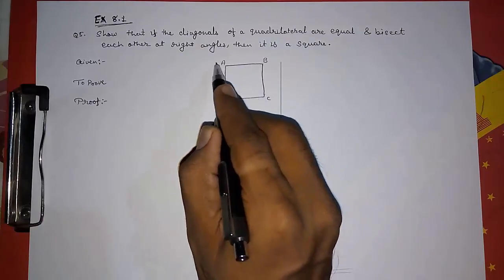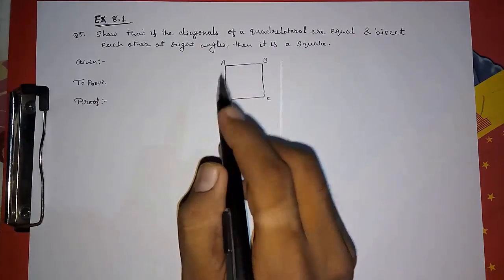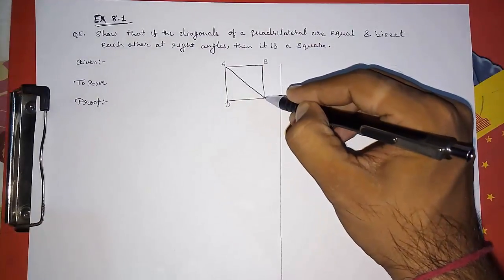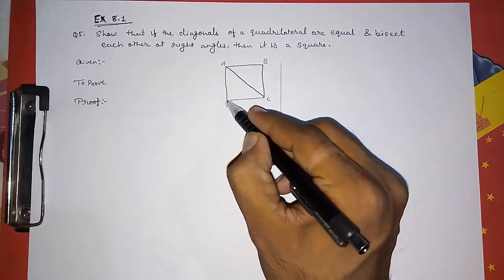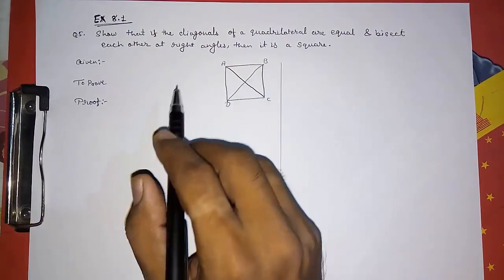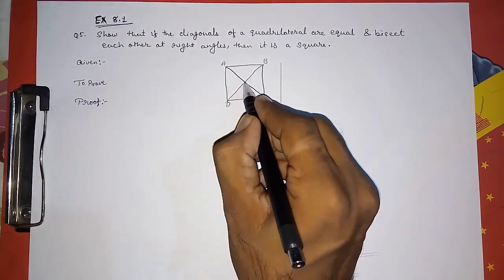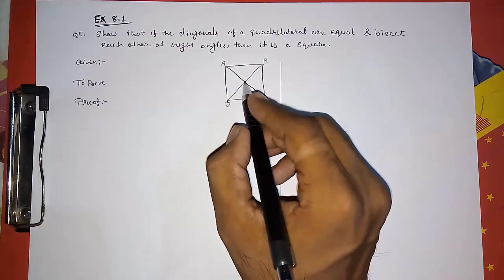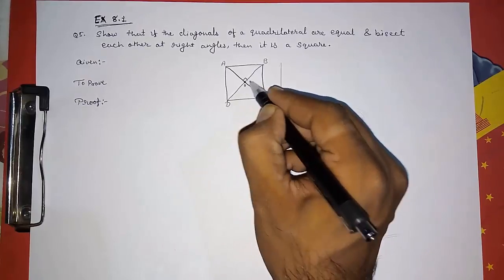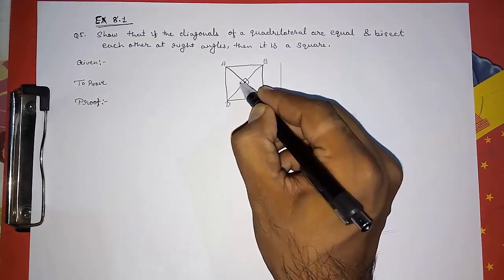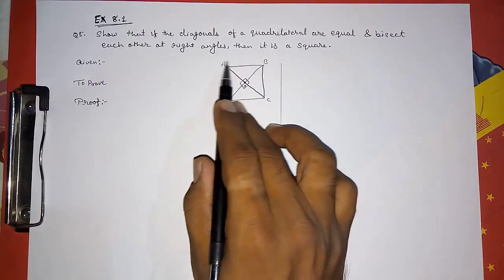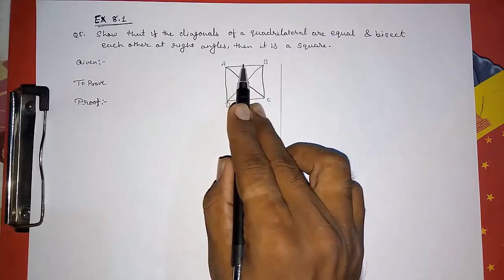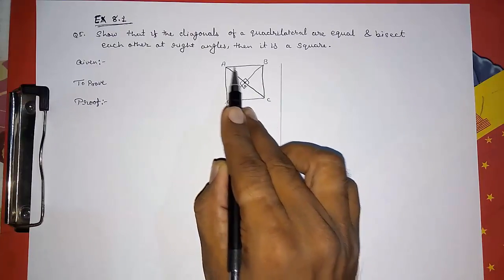Here we have a quadrilateral ABCD. It is given that the diagonals AC and BD are equal. Since the diagonals bisect each other, AO equals CO and BO equals DO. They bisect at right angles, so all those angles are 90 degrees, and we have to prove that it is a square.